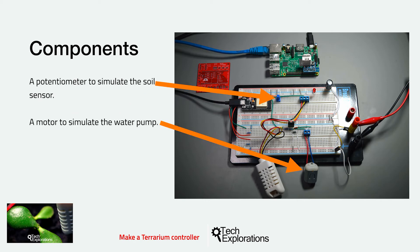In the photo you see in this slide, you can see all of the hardware components that are needed in this project. Apart from the Raspberry Pi and the ESP32, there's a motor, a DHT22 sensor, a potentiometer, and a few other things that I'll describe later.